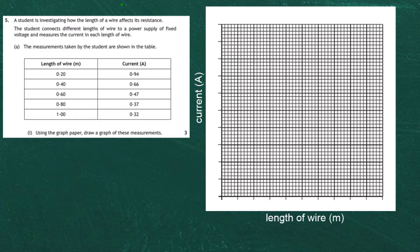You can see the length of the wire is measured in metres and the current is measured in amps. Now, using the graph paper provided, draw a graph of these measurements — you only get 3 marks for this. One of the hardest things about starting a graph is actually where you start. The length of the wire is going to go along the horizontal axis, and the current is going to go up the vertical y-axis. Now, what's going to be the scale of this graph?